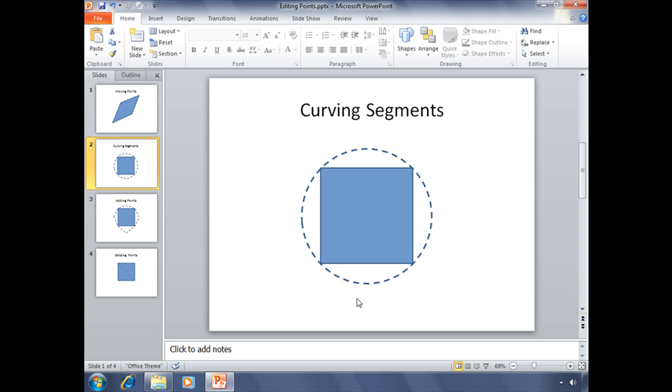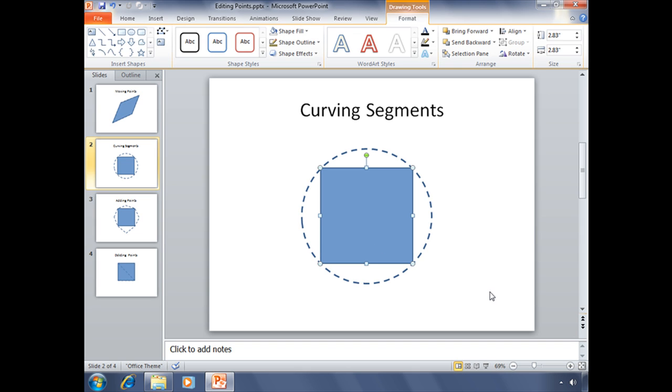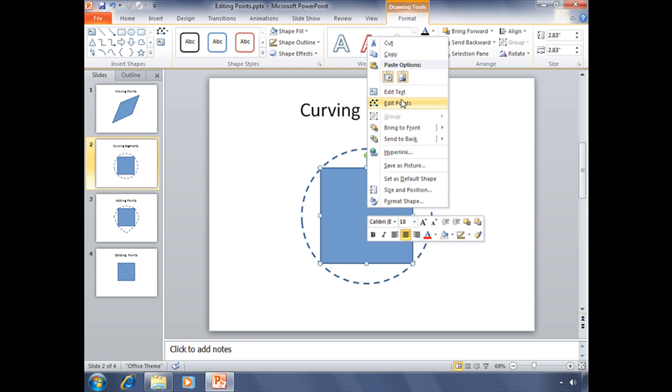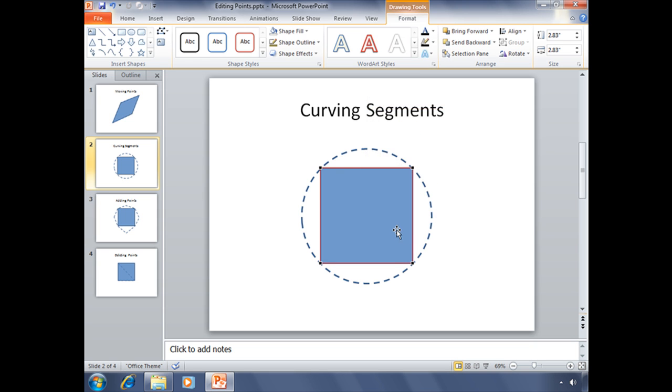The next way is to adjust how the segments curve. For this one, we're going to try to make this square into more of a circle. First thing we've got to do is select that square. Then we can right-click to also access that Edit Point button. So, clicking on Edit Points.